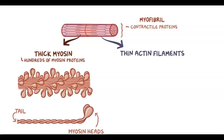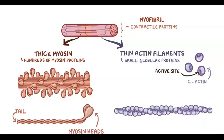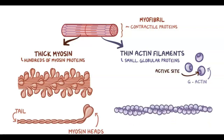In comparison, the thin actin filaments are made up of small, globular proteins called G-actin. Each G-actin has an active site that the myosin head binds to during contraction. These G-actin proteins form a filament that looks like a long helix structure, like a pearl necklace that's gently twisted.